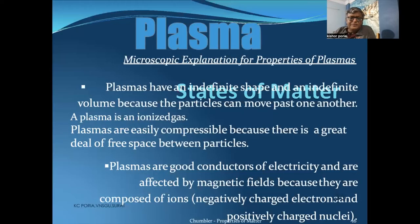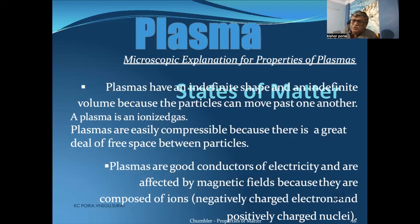We are all familiar with Boyle's law, Charles's law, and Avogadro's law. Using these, we can write the ideal gas equation: PV = nRT. This is the basic information about the classical phases of matter — a revision of our school days.